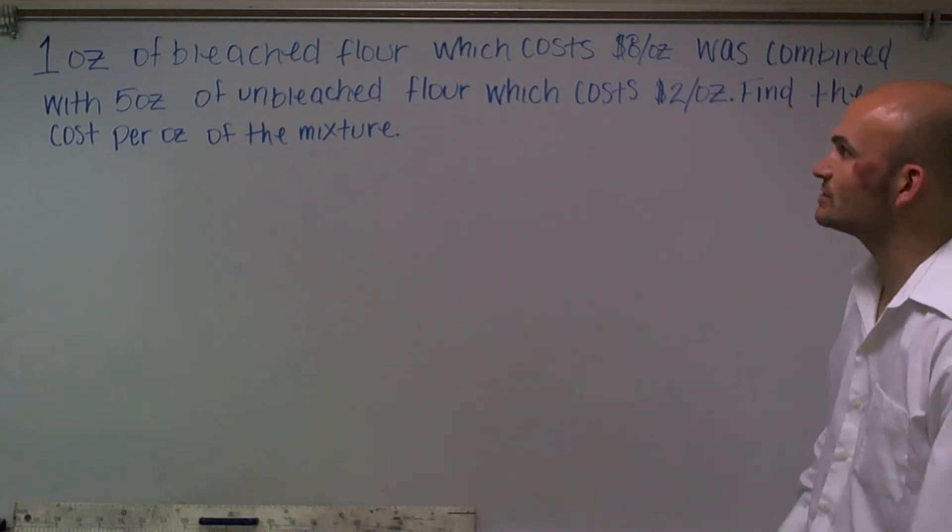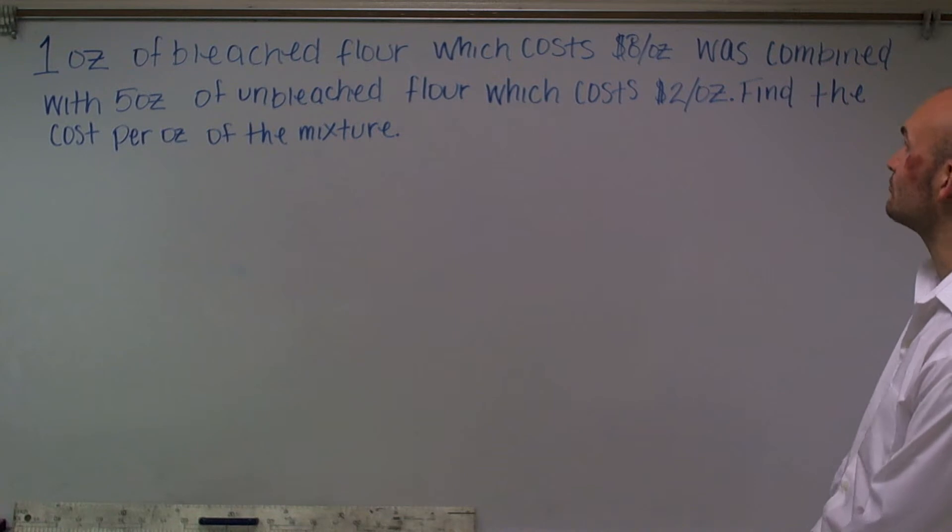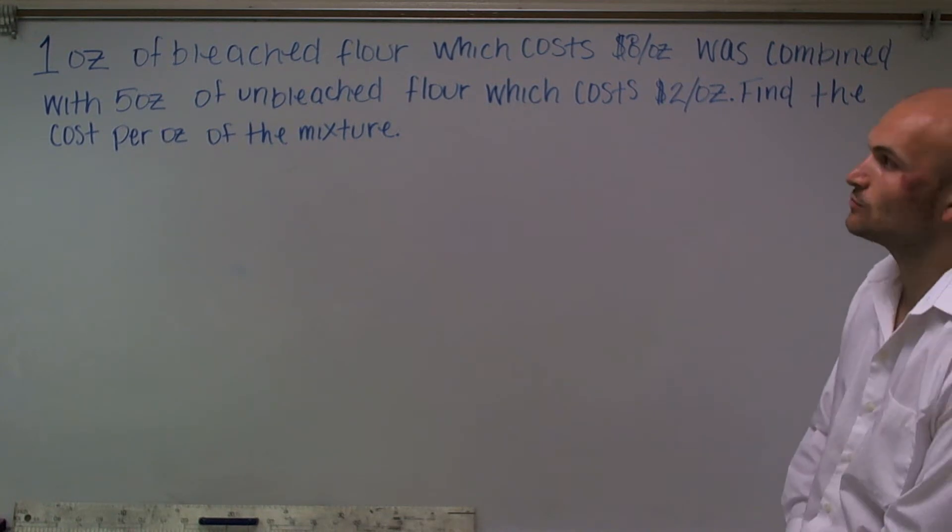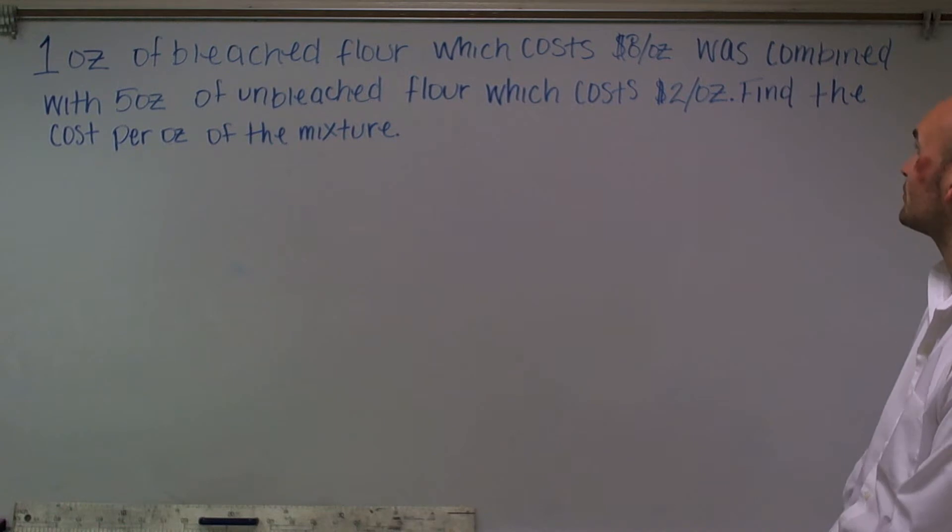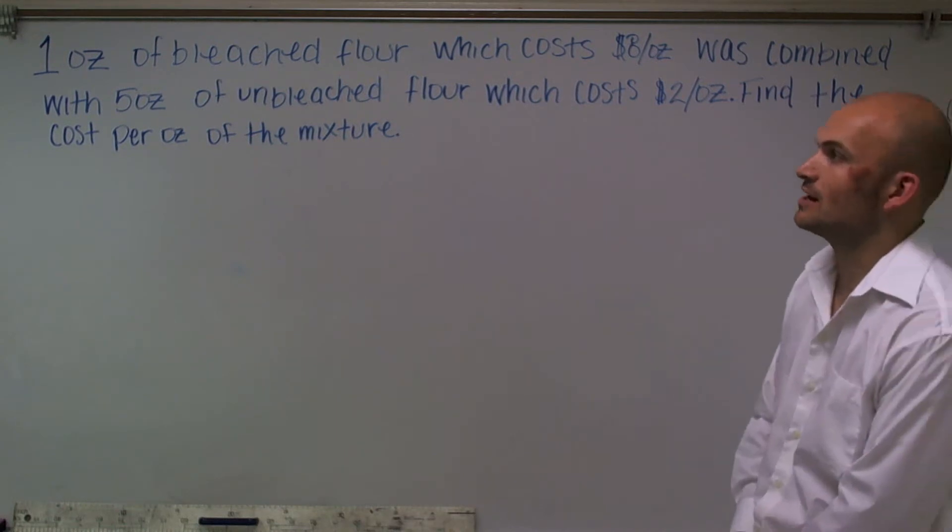It says one ounce of bleached flour, which costs $8 per ounce, was combined with five ounces of unbleached flour, which costs $2 per ounce. Find the cost per ounce of the mixture.